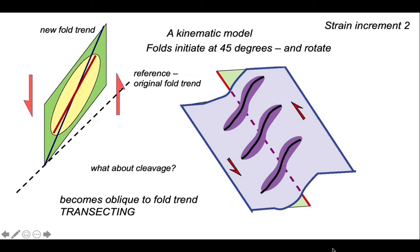This is called cleavage transection. In other words, with respect to this shearing, the cleavage is lagging behind the rotation experienced by the fold hinge line.